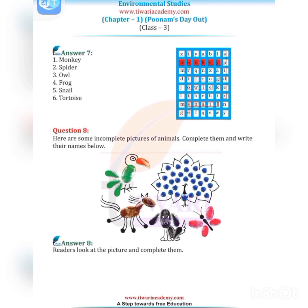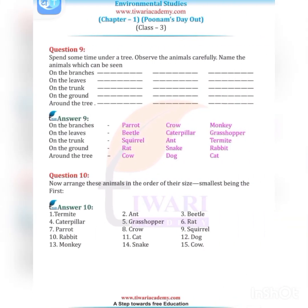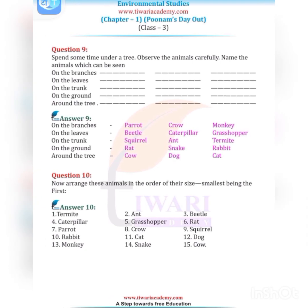Spend some time under a tree and observe the animals carefully. Animals on the branches: parrot, crow, monkey. On the leaves: beetle, caterpillar, grasshopper. On the trunk: squirrel, termite. On the ground: red ant, snake, rabbit. Around the tree: cow, dog, cat. Now arrange these animals in order of size, smallest first: termite, beetle, caterpillar, grasshopper, red ant, parrot, crow, squirrel, rabbit, cat, dog, monkey, snake, cow.